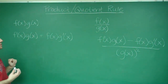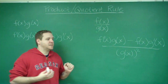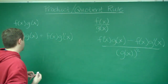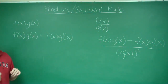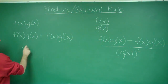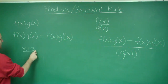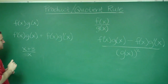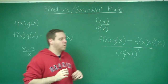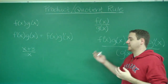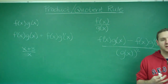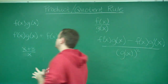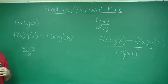Those are the general rules for the product and quotient rule. Let's go through an example of why you might want to switch between them. Consider the function (x + 3) over x. One way to handle this is to separate the fraction, which would actually be the simplest approach here, but I want to show you that you can use either the quotient rule or the product rule for this.